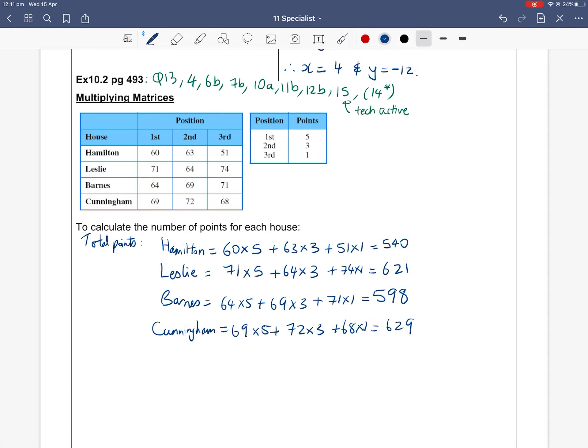So after tallying all the points, we can see that Cunningham House won the sports competition. This is how we would calculate the total points based on the two tables given to us, telling us the information regarding the house and the number of people that came first, second and third, and the positions versus the number of points allocated to each position.